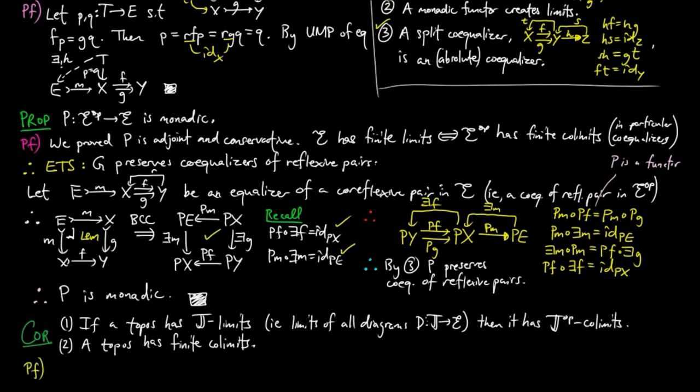For the proof, we have P creates limits in E, so if the limit of PD exists in E, then the limit of D exists in E-op, and P preserves it.